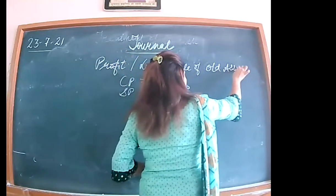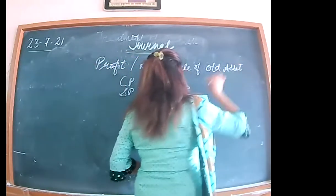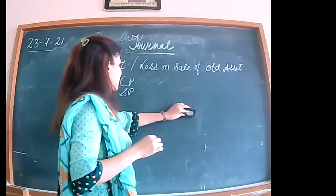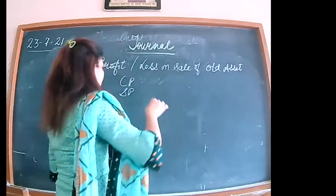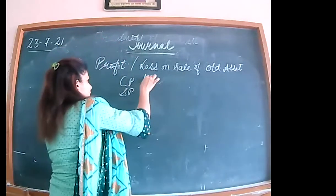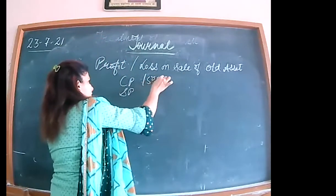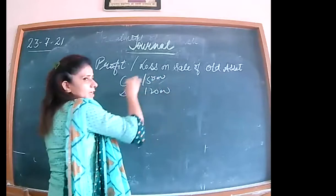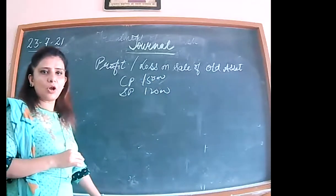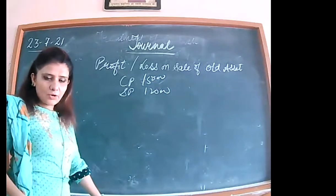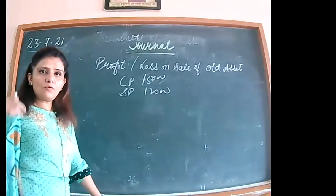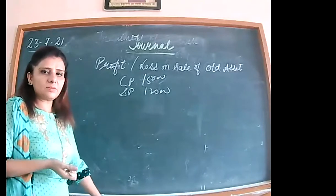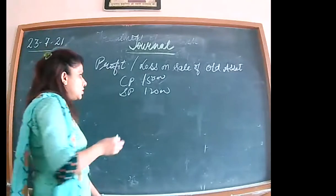For example, you buy your own furniture at a cost of Rs. 15,000. It sold for Rs. 12,000 — we have a loss. Following the nominal account rule: all losses are to be debited.